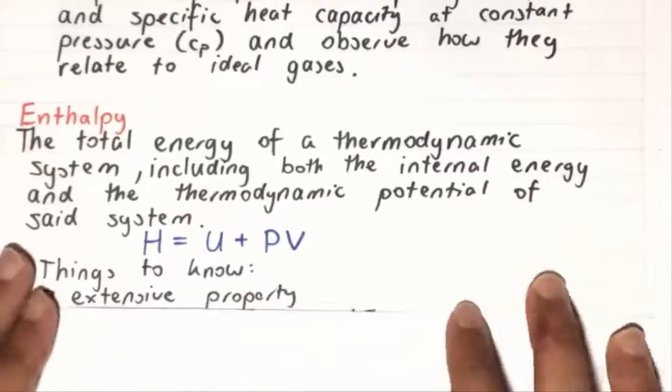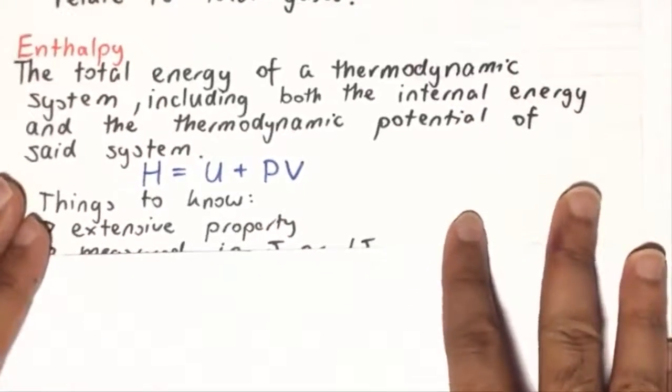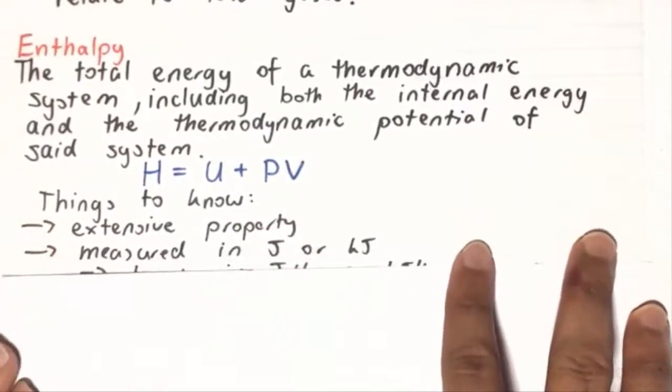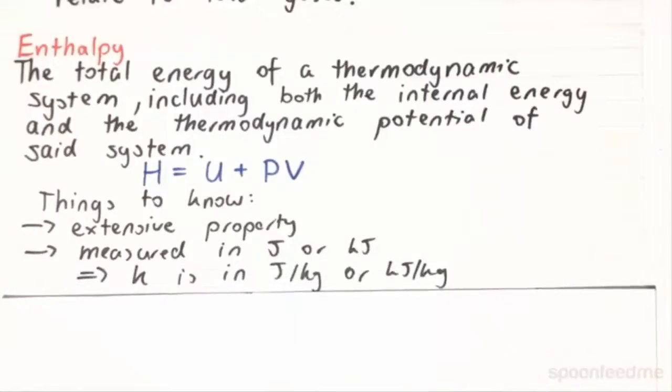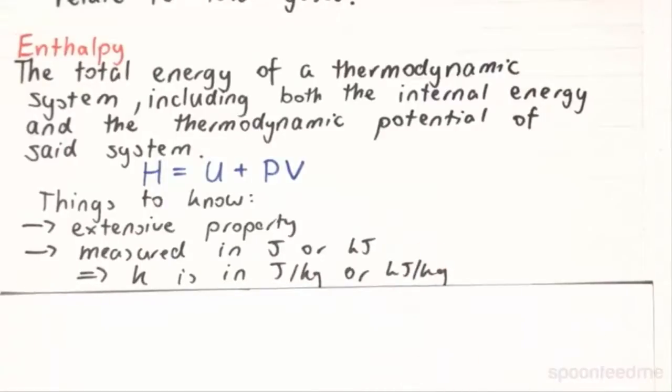So the things to know about the enthalpy is that it is an extensive property. It is measured in joules or kilojoules, and if in its intensive state, it's going to be lowercase h and is in joules per kilogram, or more commonly in kilojoules per kilogram.